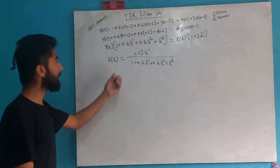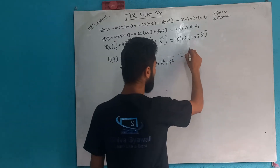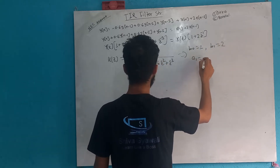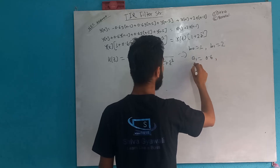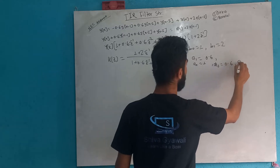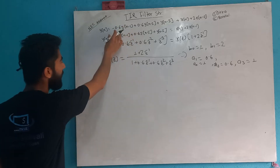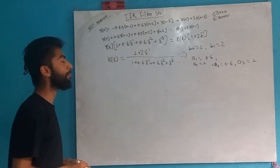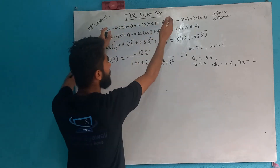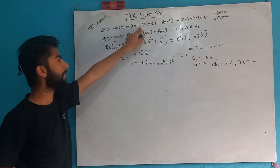So we will see that we can represent the same way. b0 value is 1, b1 value is 2, a1 value is 0.6, a0 value is 1, a2 value is 0.6, and a3 value is 1. So this is linear. c1 value is 0.6 and a1 value is 0.6, so we can take a minus sign and write the linear equation for y. In the case of y terms, minus 0.6, because this value is 0.6 and this value is 0.6.